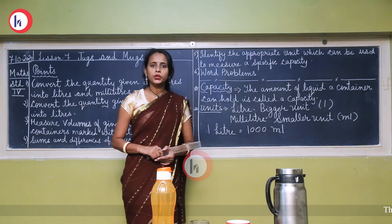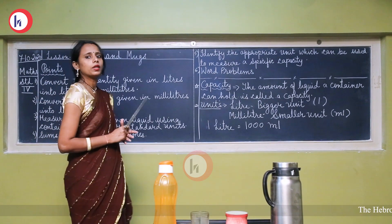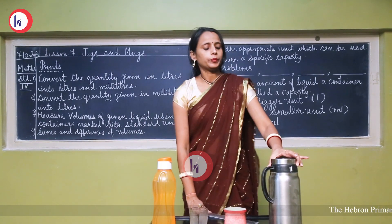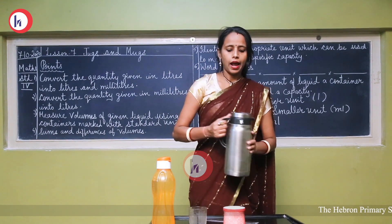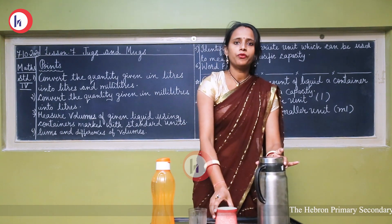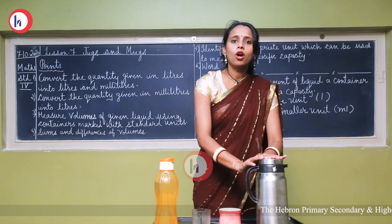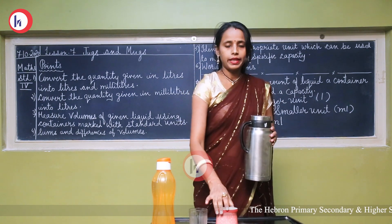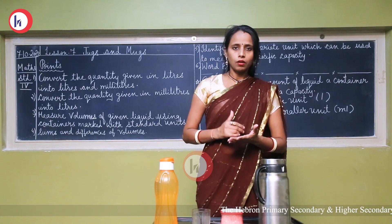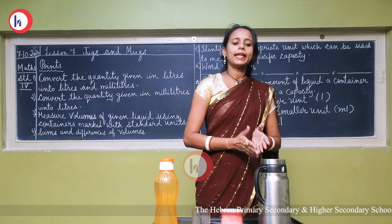Hello students, today we will start our new lesson, lesson number 7 — Jugs and Mugs. You are all familiar with this word and in your previous standard you have learned about this chapter, so now let's revise it again. This is a jug and this is a mug. When you look at both these things, they are different in their shapes, size, and capacity. The capacity of this jug is more than this mug, and we use it at home to drink water, juice, or to keep any liquid.